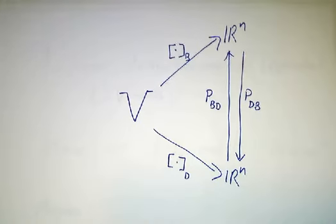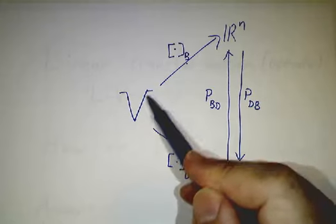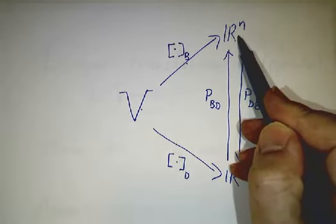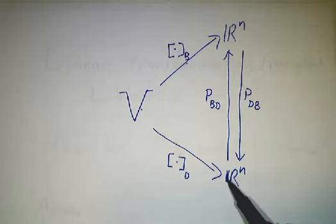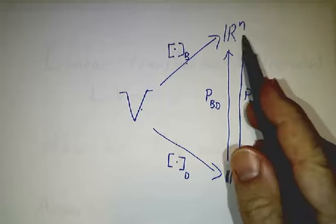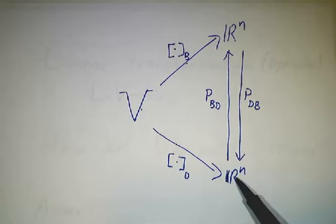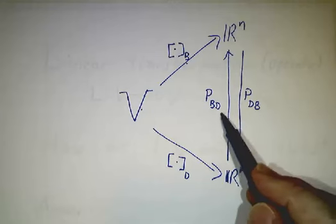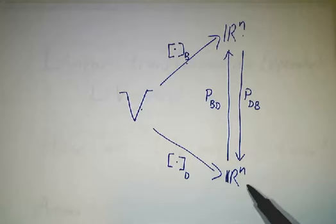We had a picture for change of basis for vectors. Taking coordinates in the b basis makes our vector space look just like R^n. Taking the coordinates in the d basis also makes it look just like R^n. The conversion back and forth eats an n-vector and spits out an n-vector — that's an n by n matrix. Pbd goes from d to b — read right to left. Pdb goes from b to d.